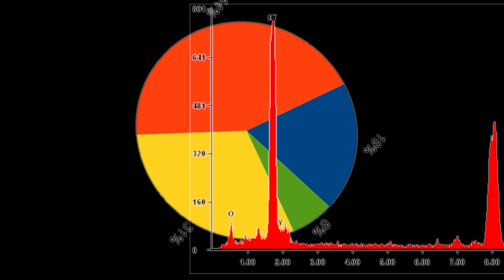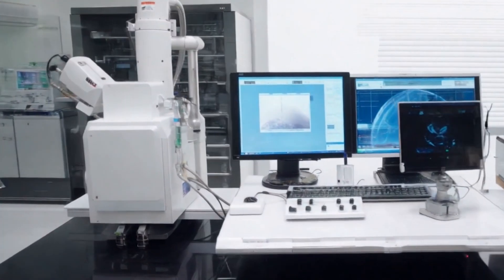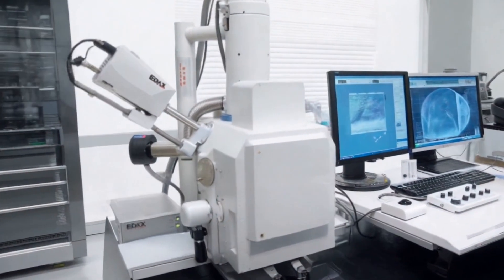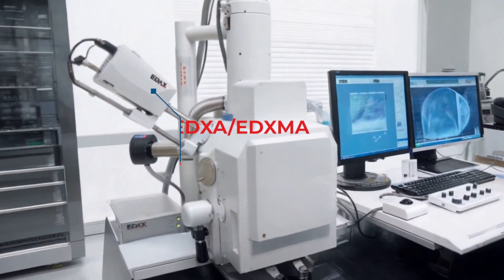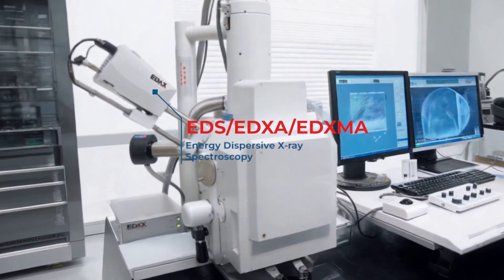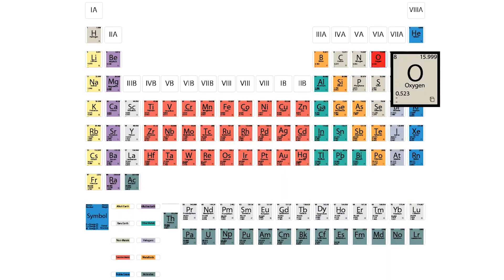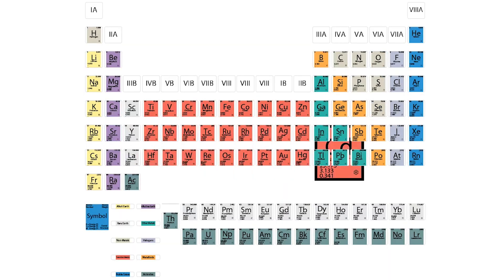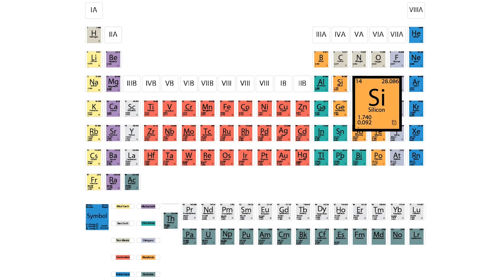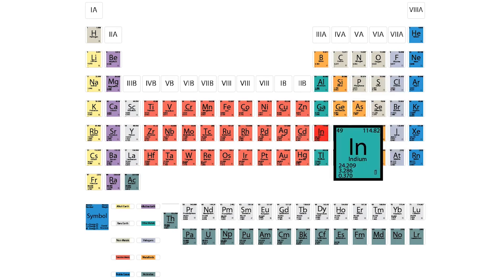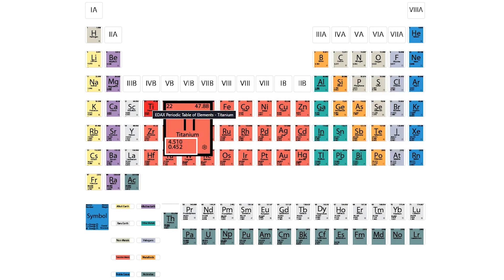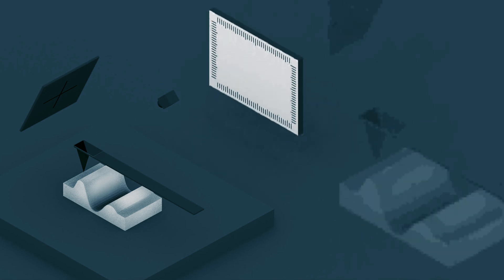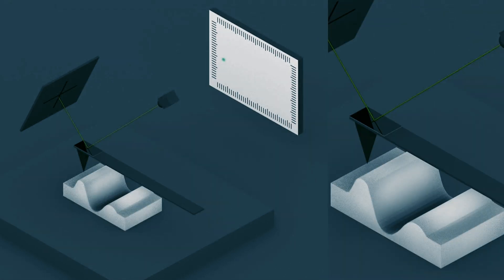What about chemical composition analysis? For that, SEM is often paired with Energy Dispersive X-ray Spectroscopy, or EDX. EDX can identify elemental composition, making it invaluable in forensic investigations, like analyzing gunshot residue.